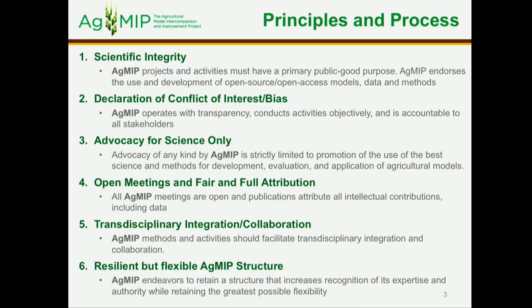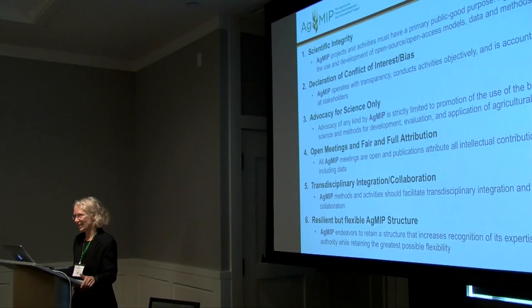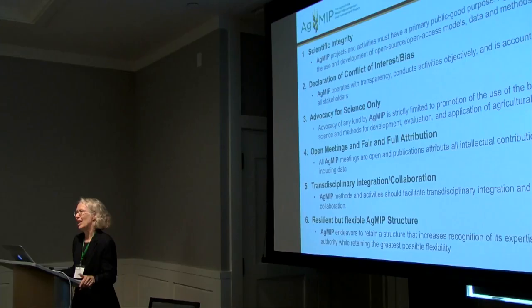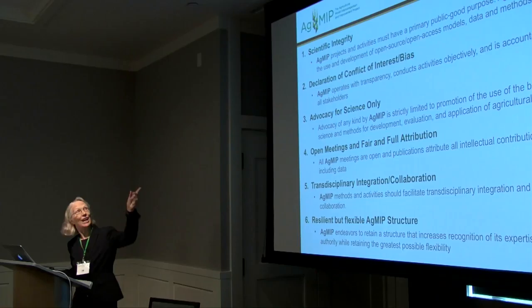The first is scientific integrity — we have a primary public good purpose. We are very clear with each other that if we have conflicts of interest or biases, we declare them so that AgMIP operates with transparency. In terms of advocacy, the only thing we advocate for is good science, the best science. We also have the concept of openness — the use and development of open source, open access models, data, and methods. We know that not all groups are there yet, but we have that as a primary objective.